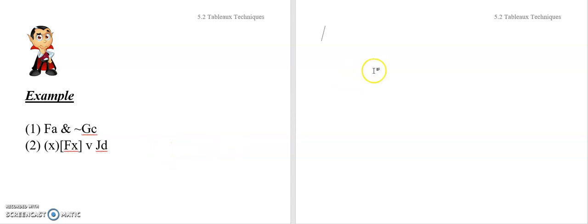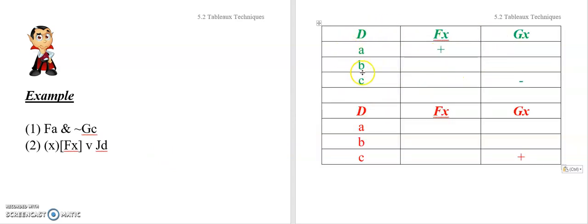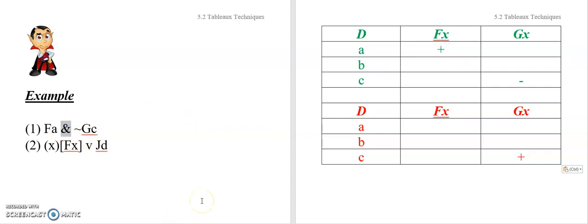Okay, hopefully we've had a chance to pause. Let's go ahead and do the answers. In green, I've got an interpretation in three objects that makes the first sentence true. In red, I've got an interpretation in three objects that makes the same sentence false. So let's do a deep dive here and see what's going on. First and foremost, this sentence is a conjunction. Going back to our truth tables — which you've got to know like the back of your hand — both conjuncts have to be true.